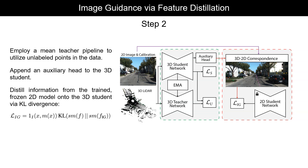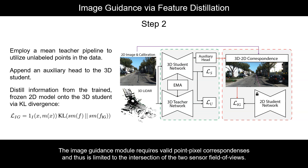In other words, we introduce a new teacher model, where boundary points along the small and distant objects are more richly defined as per the feature representation, to further and better guide the student on unlabeled points. As our image guidance module requires valid point-pixel correspondences, the auxiliary supervision remains limited to points that fall onto the image.